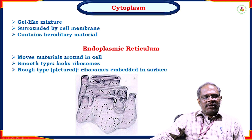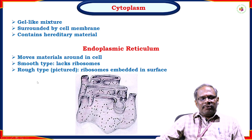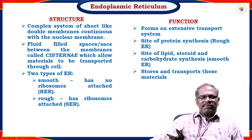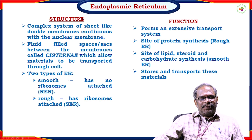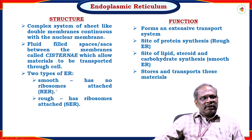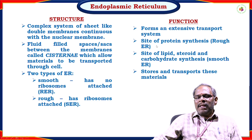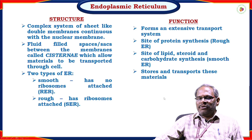The endoplasmic reticulum surrounds the cell. The smooth endoplasmic reticulum lacks ribosomes, while the rough endoplasmic reticulum contains ribosomes embedded in its surface involved in protein biosynthesis. The endoplasmic reticulum is a complex system of sheet-like double membranes continuous with the nuclear membrane. Fluid-filled spaces called cisternae allow materials to be transported through the cell. Functions: forms an extensive transport system, is the site of protein synthesis (rough ER), site of lipid, steroid, and carbohydrate synthesis (smooth ER), and stores and transports these materials.